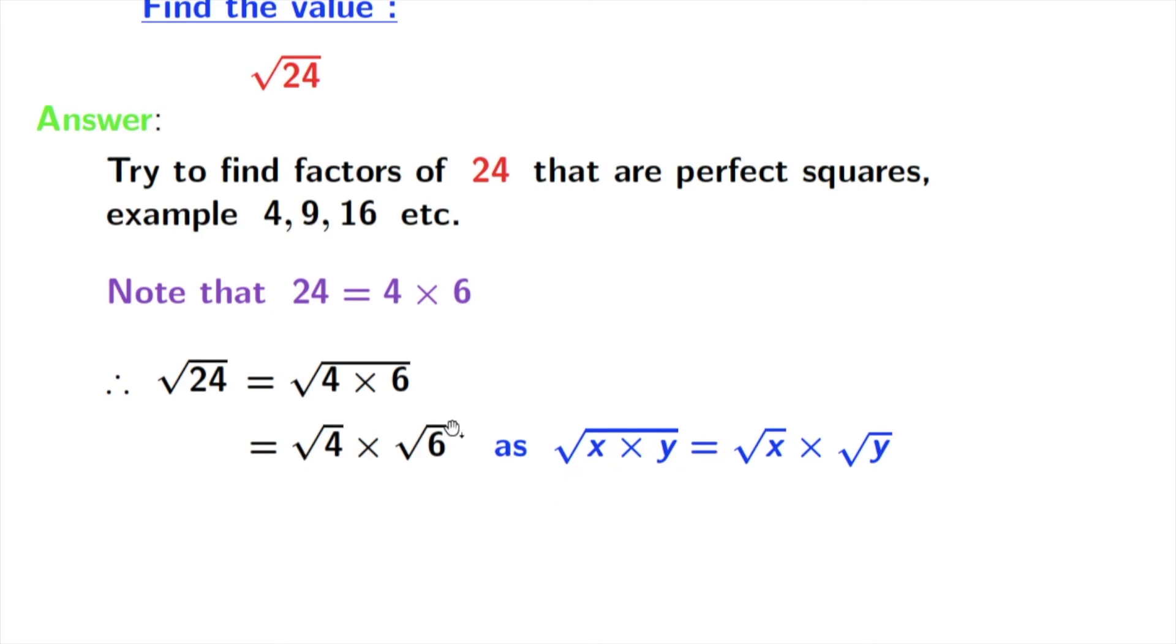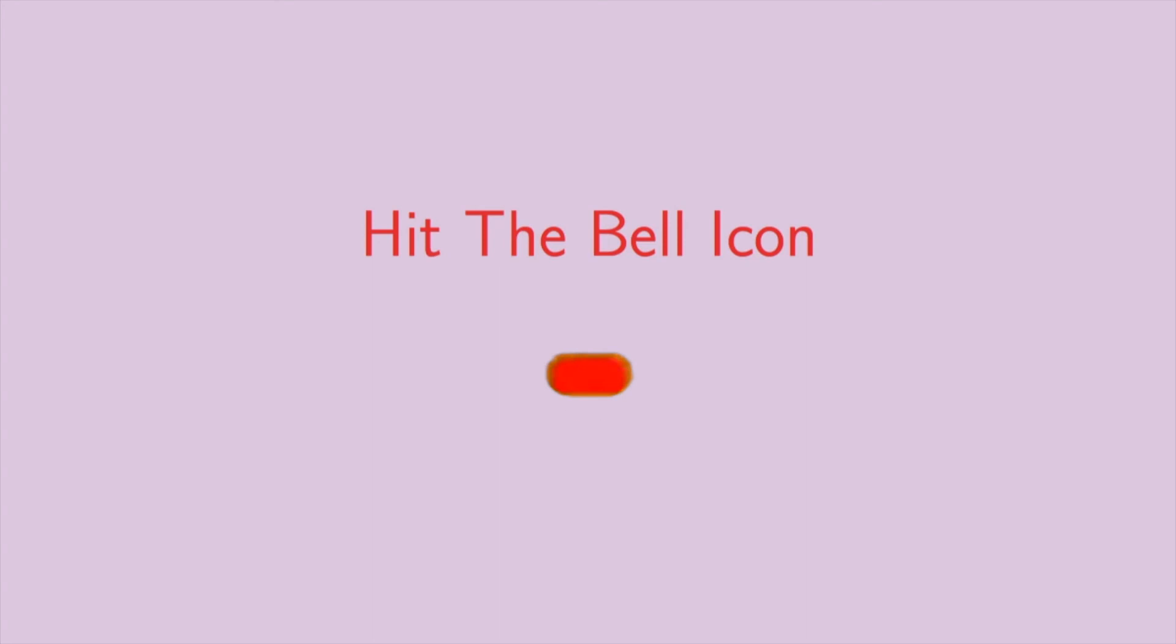Now look that square root of 4 can be written as 2, and we will write it as 2 times root 6. That means 2 root 6, and this is our expected answer. Thank you for watching.